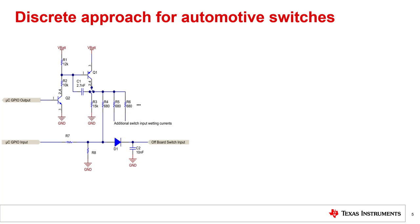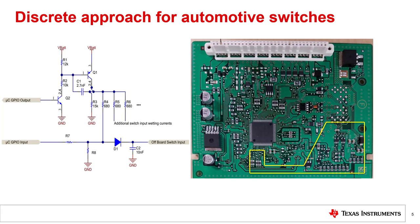The high component count increases both the size of the physical solution and the bill of materials and manufacturing cost, as seen in the figure above. There is high power consumption because the wetting current and microcontroller must remain on constantly, always monitoring the GPIOs, which impacts fast switch response time. Variations in wetting currents are also common due to transient load changes from the shared current source and component tolerance variations, as well as abnormal events such as load dumps and jump starts that can cause system malfunction. And with each switch option requiring a different discrete design, it lacks design portability and reuse.